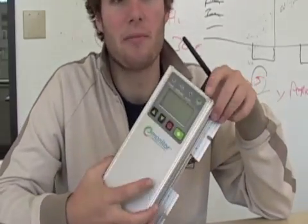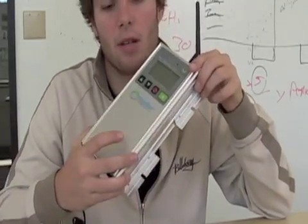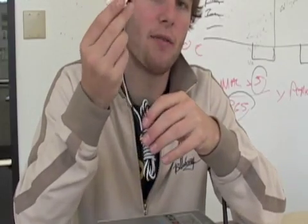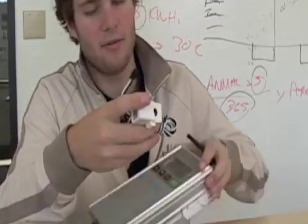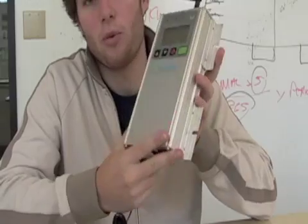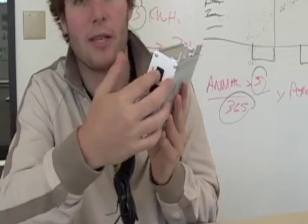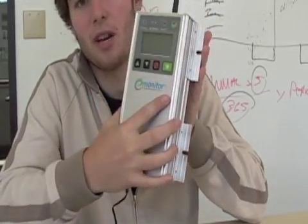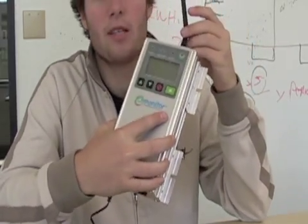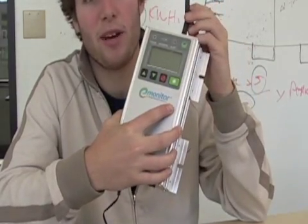Another device we like is called the E-Monitor. This one's a little bit more complicated to install, but it gives you granularity of data down to the plug level. You take one of these and attach it around the wires inside the fuse box, which transmits the data back into the device, giving you an accurate real-time readout down to the plug level. If you want to read it from outside the device, you plug an Ethernet cable into it and run it straight to your computer where you can see your real-time data at any time of the day. It runs at about $1,000, but you can get it at E-Monitor.com, and it's a fantastic device.